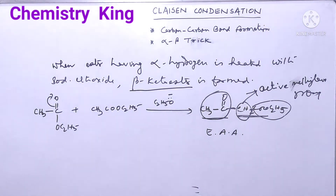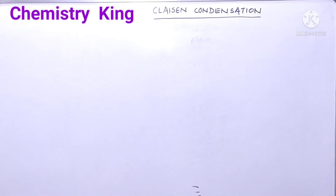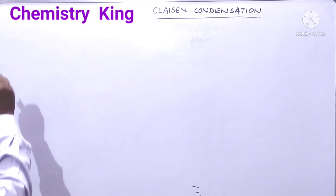All these are about the statement and reaction of Claisen Condensation. With the help of Claisen Condensation, we get a very important compound — that is ethyl acetoacetate. Now we will see its mechanism.